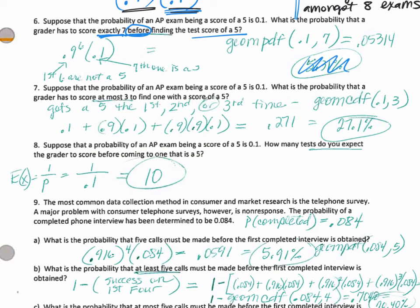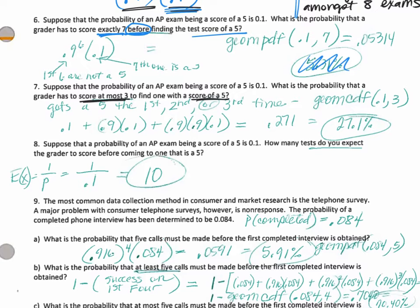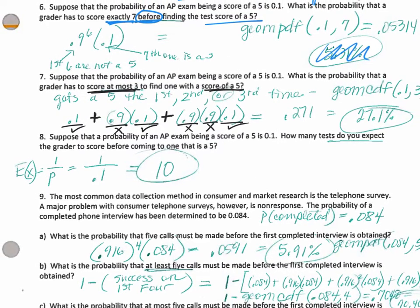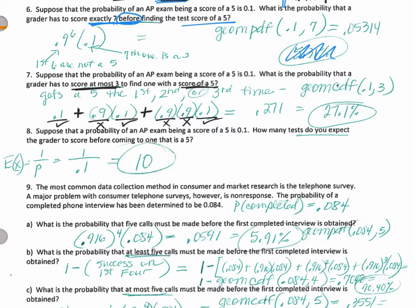Number 7: you have to score at most 3 to find the person who got a 5. About 10% in the nation get 5s on the AP Stats test. At most 3 means you could get not a 5, not a 5, and then it's a 5 — but it's at most 3, so you could also find the winner on the second one or the first one. So here you could find the winner on the first, second, or third. You can compute that by hand or do a geometric CDF of 0.1 up to the third spot.